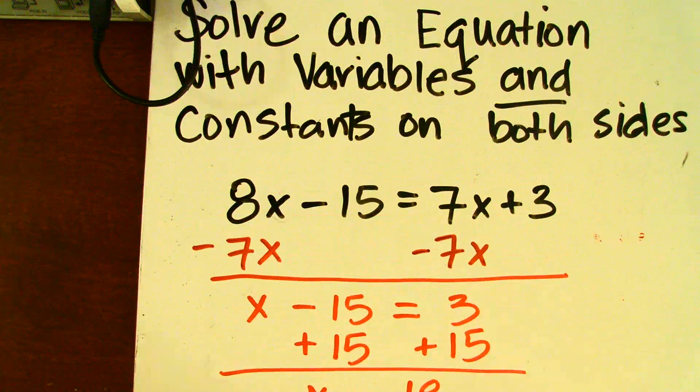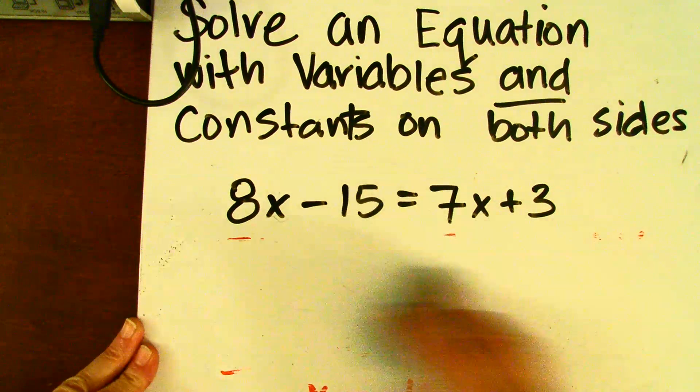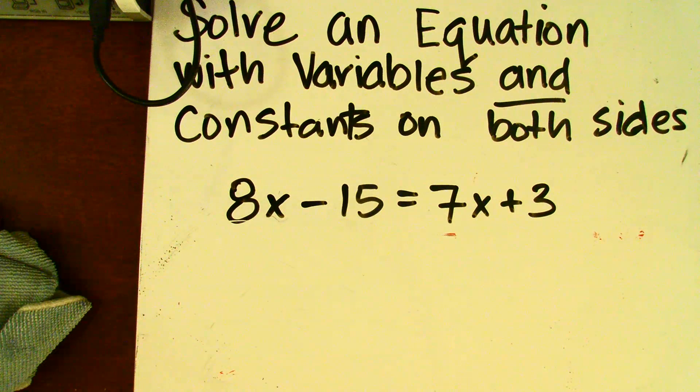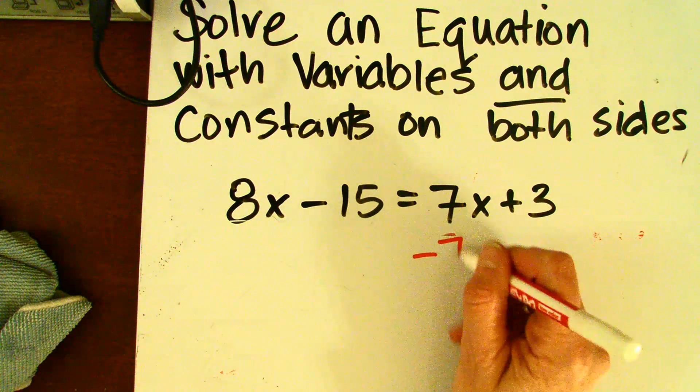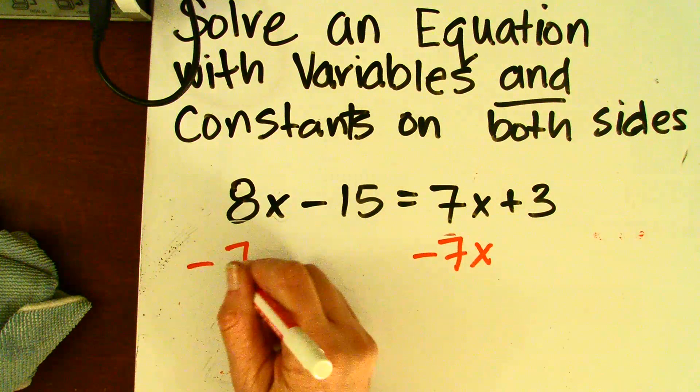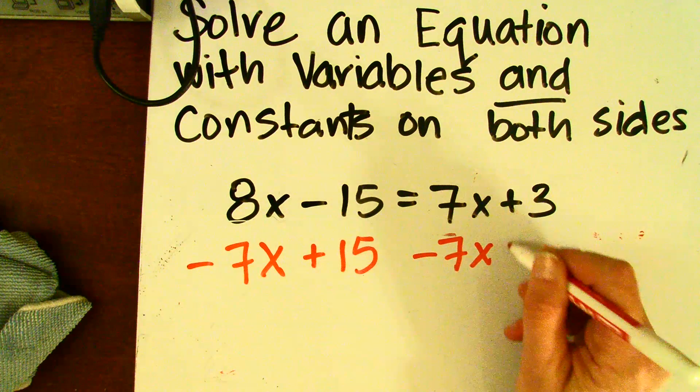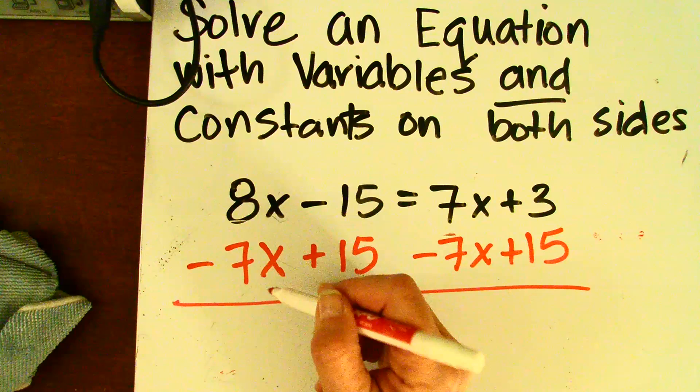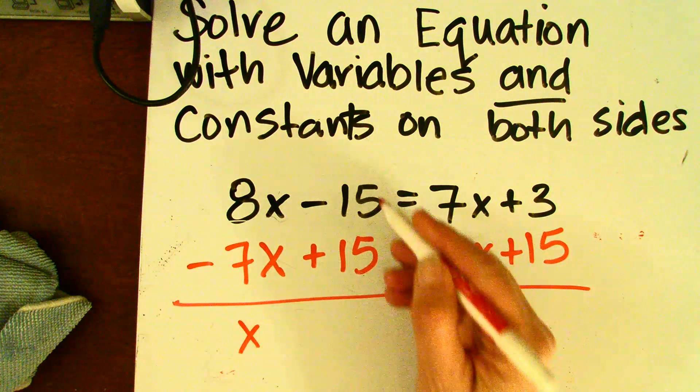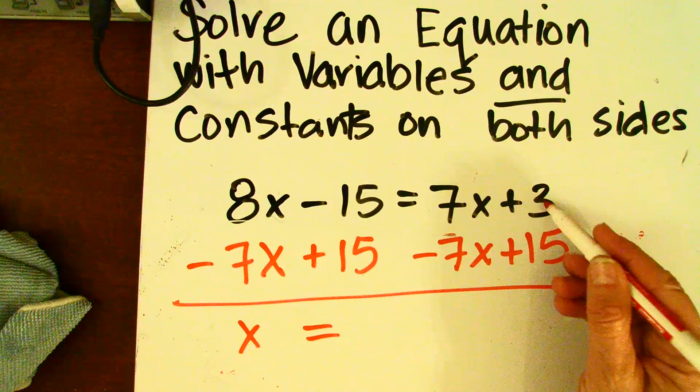Now, another way to do this is to do the switching at one time. Let me show you. We're going to move this 7x to the left, so we're going to subtract 7x from both sides. Then we're going to add 15 to both sides. 8x minus 7x is x. This is going to cancel. This is going to cancel, and then we're left with 18.